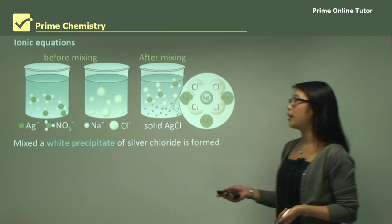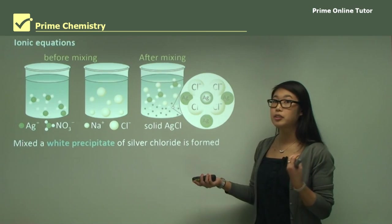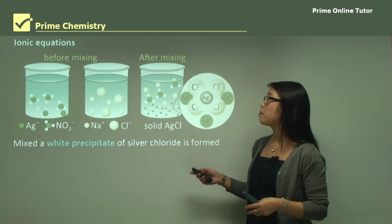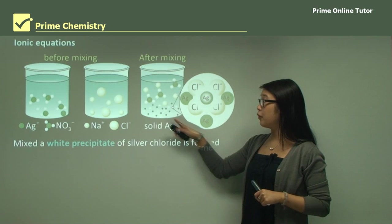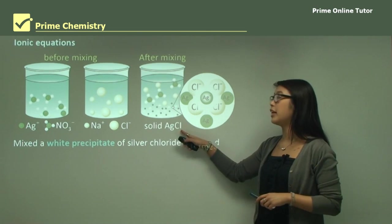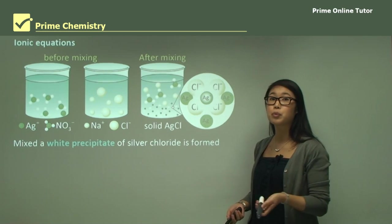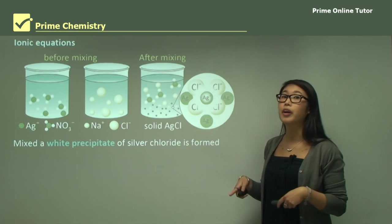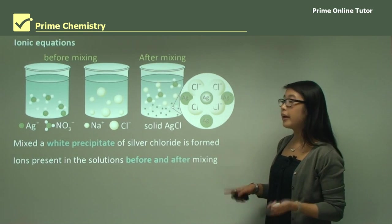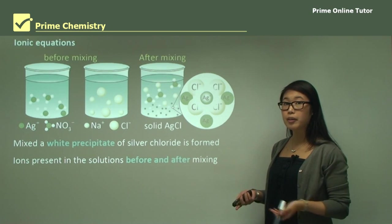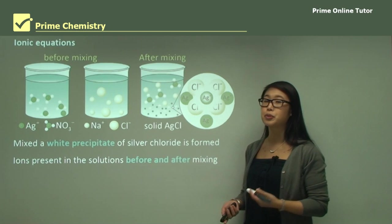When we mix silver nitrate and sodium chloride, both of them are soluble in water when they're separate, but when we mix them together we form a reaction between the silver and the chloride. This forms silver chloride, which is insoluble and forms a white precipitate, making the water look cloudy. Ions present before and after are fine because they're dissolved in the water, but mixing them produces a chemical reaction which yields a solid.